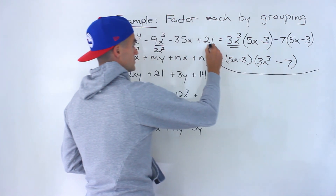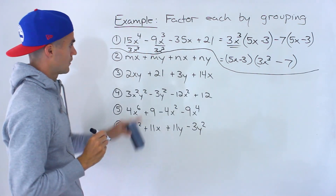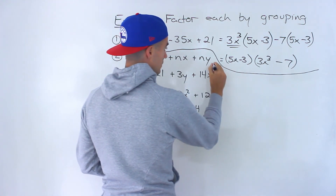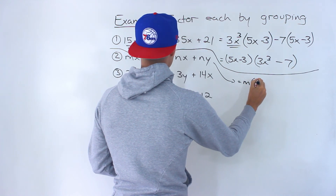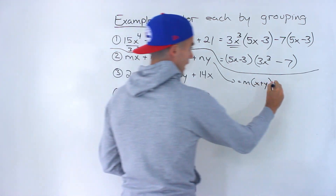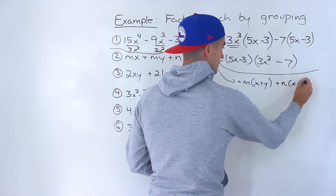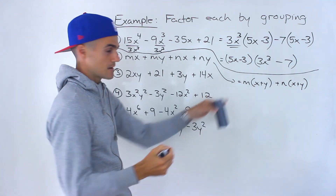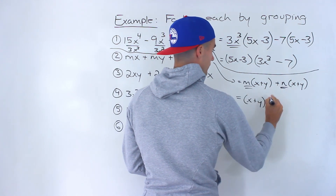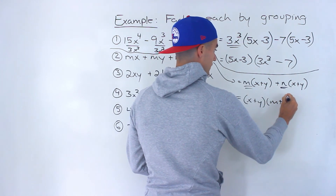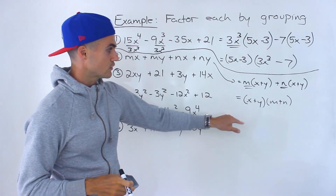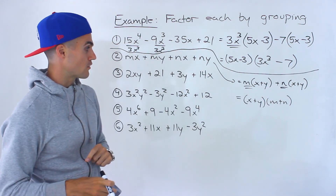Moving on to number 2, same process. Out of the first two terms, we could take out an m and be left with x plus y. From the next two, we could take out an n and be left with x plus y. We get that same bracket, so we take the bracket out and we're left with m plus n. Do a final check — x plus y can't factor further, and m plus n can't factor further either.